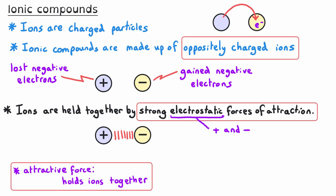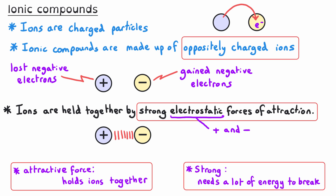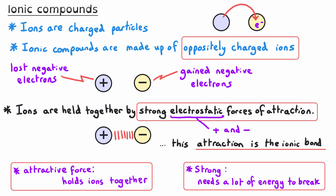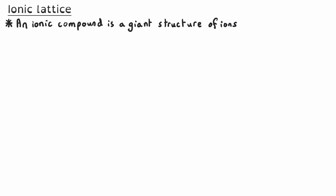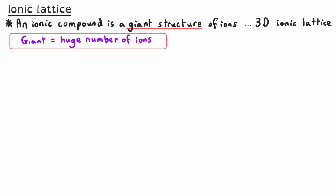It's an attractive force, so that means it is holding those ions together — shown here with red lines. They're strong electrostatic forces of attraction, which means that a lot of energy would be needed to break them. It is this strong electrostatic force of attraction that is the ionic bond; it is the force that holds the ions together. An ionic compound is actually a giant structure of ions, sometimes referred to as a three-dimensional ionic lattice.